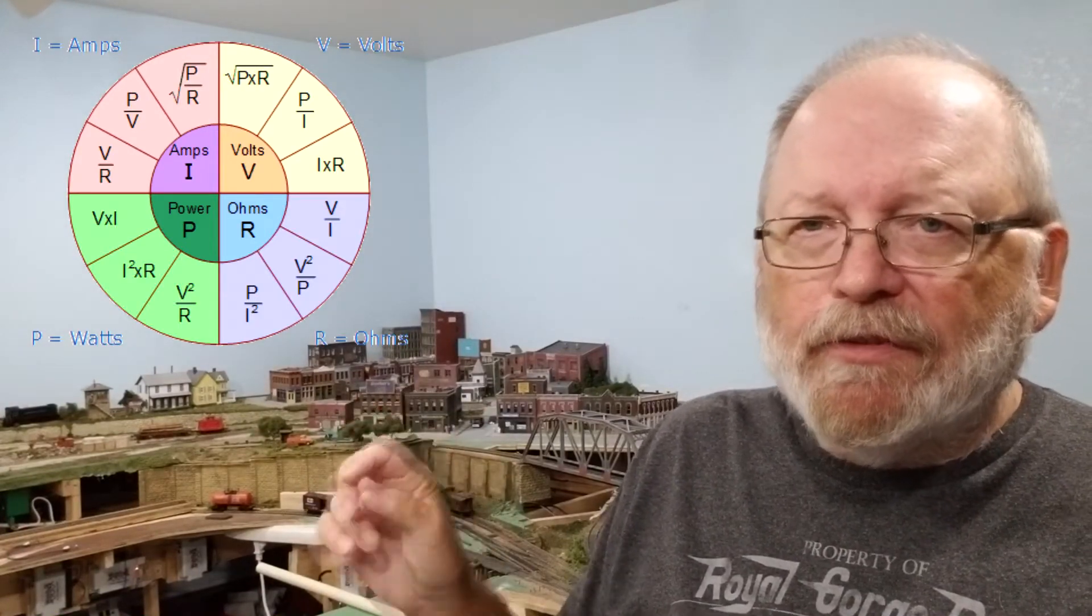First thing we're going to talk about is Ohm's Law. Now this little chart right here, this little pie chart there, that's a little bit complicated and that goes into really great detail but what I'm going to do is just go over the basics of Ohm's Law and we're going to talk about voltage, current and resistance and that's the three factors in Ohm's Law. Voltage equals current times resistance, plain and simple.